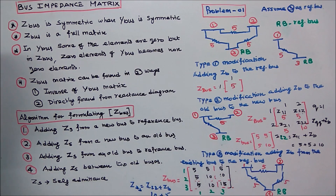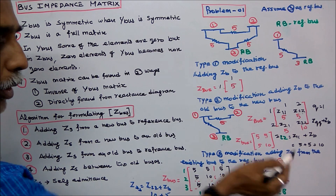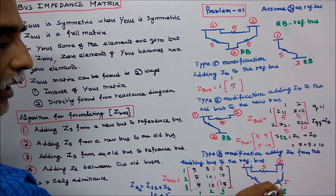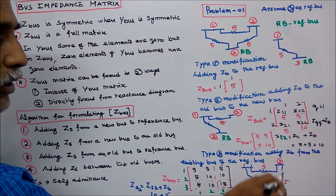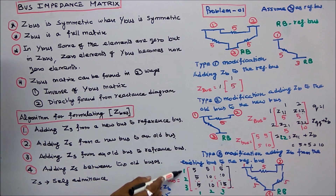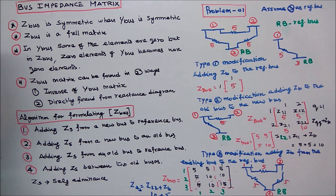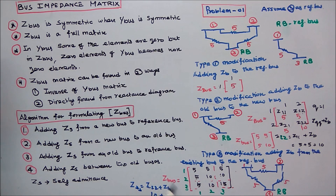The third is Type 3 modification: adding ZB from the existing bus to the reference bus. This is the reference bus (bus 3) and this is the old bus (bus 2). We are going to connect ZB of 5 from bus 2 to the reference bus. The matrix with the added row and column becomes [5, 5; 5, 10] with row/column [5, 10] appended. Z33 is equal to Z22 plus ZB, which is 10 plus 5, equal to 15.